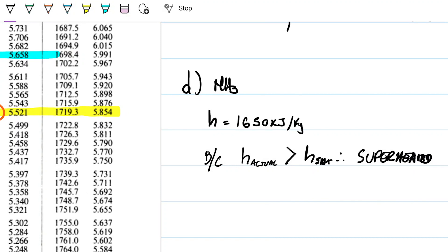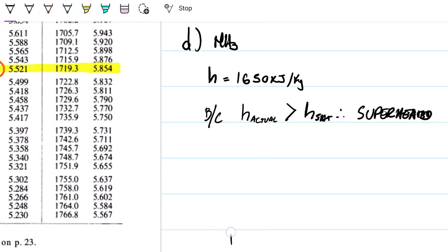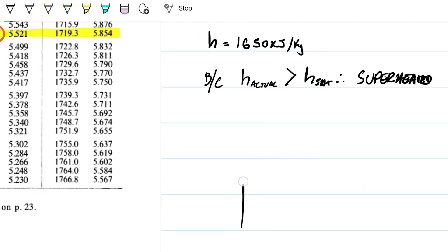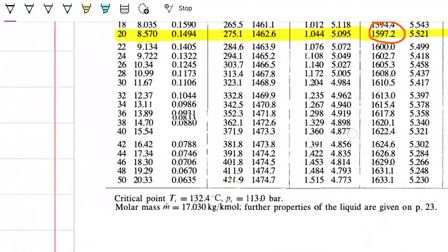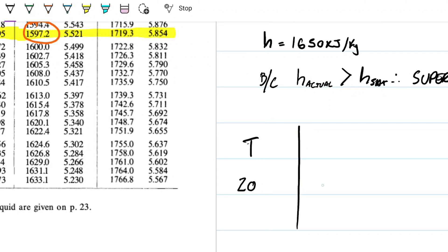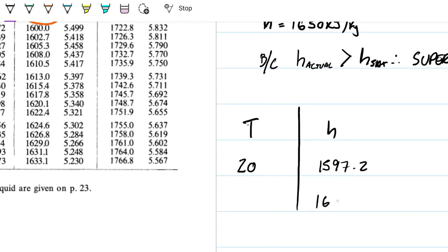The question is: we're superheated, but by how much? Because we know it's superheated, but to grab the properties we're looking for, we need to know the difference — by how much we're superheated — to do the same math as before. So we're going to do a little property analysis. T_sat at 20°C is at an entropy of 1597.2, and our value we're looking for is 1650.